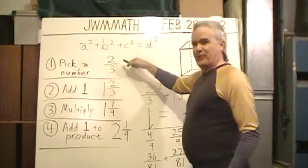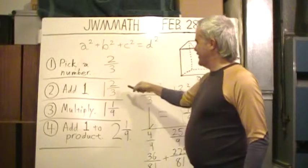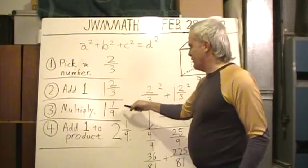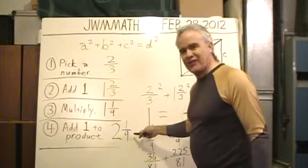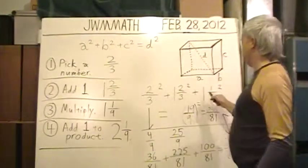Yep, it worked with two-thirds. Two-thirds, added one, one and two-thirds. Multiplied them, one and one-ninths. Added one to the product, two and one-ninths. Added these all up when they were squared.